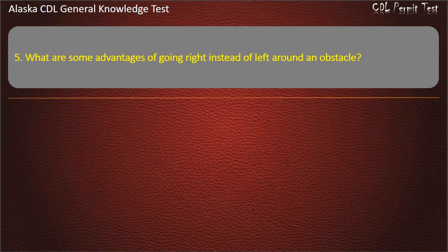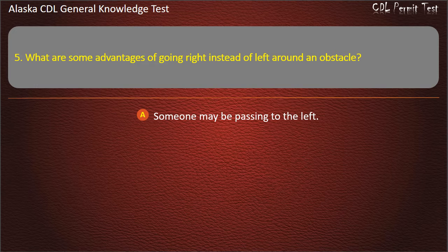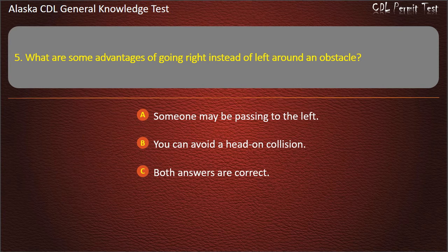Question 5. What are some advantages of going right instead of left around an obstacle? Both answers are correct. Answer: Both answers are correct.